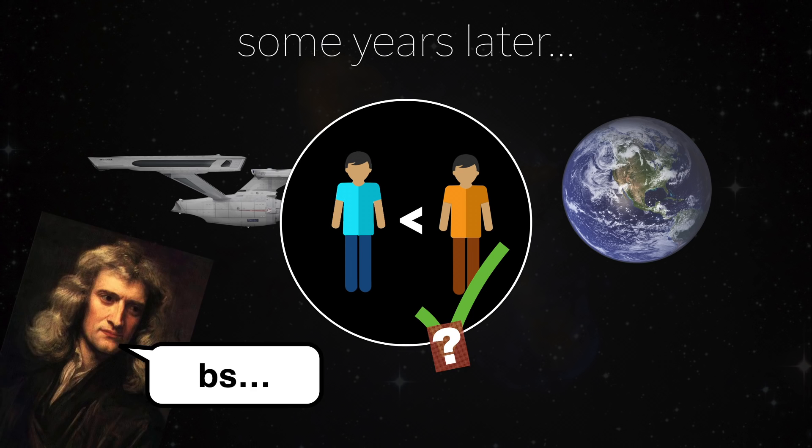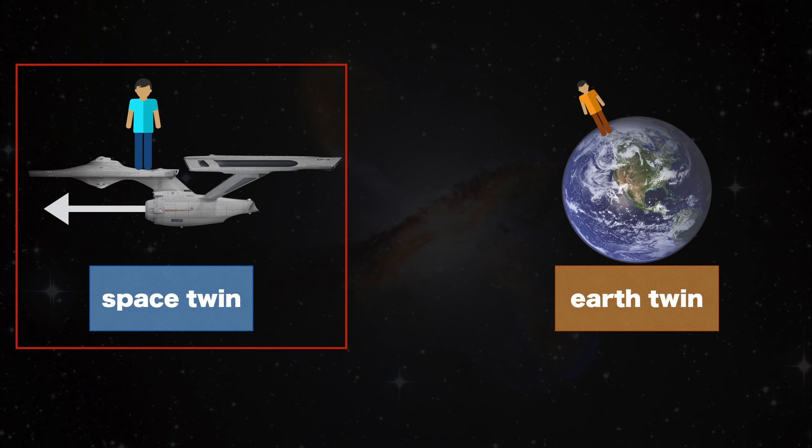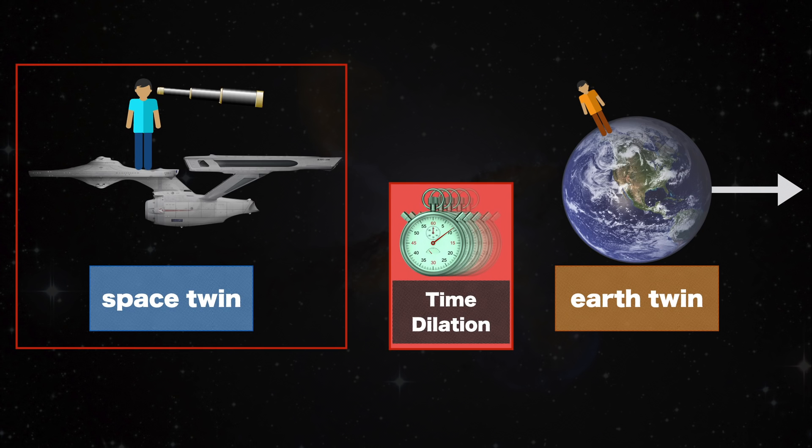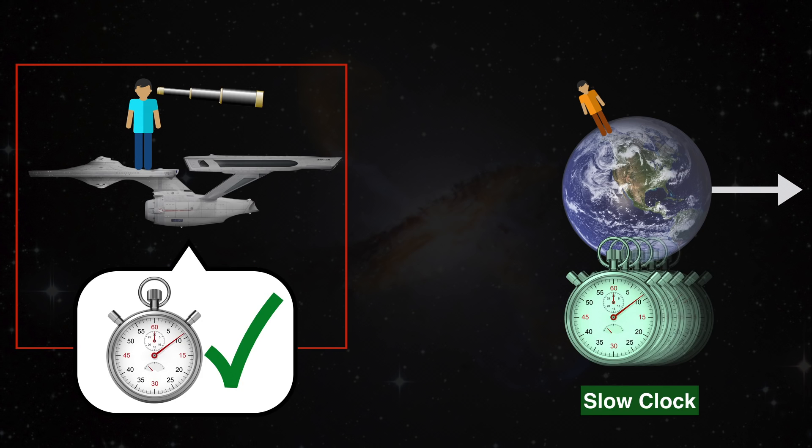Well, it's not that simple. From the perspective of Space Twin, he is himself at rest and Earth is moving at high speed relative to him. Thus, when he observes Earth, according to special relativity, he will see their time running slower.